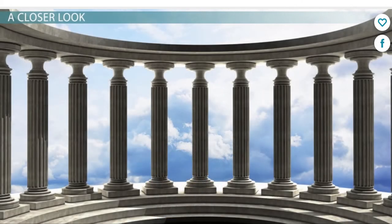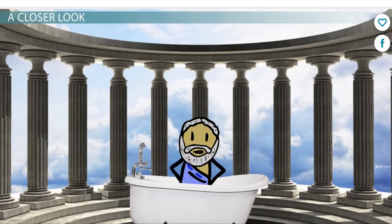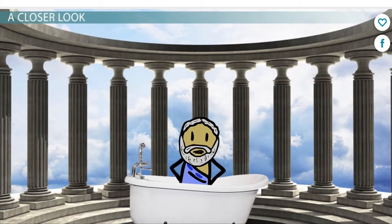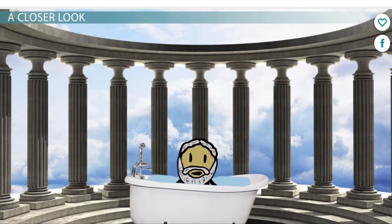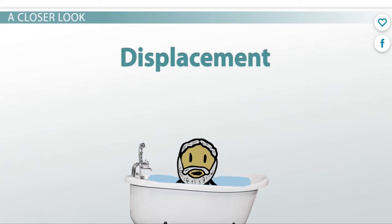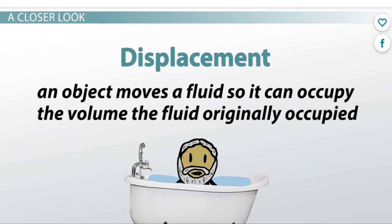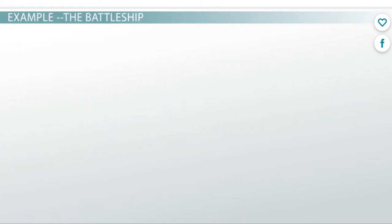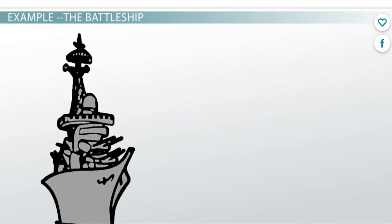As the story goes, Archimedes poured himself a warm bath one day, and when he got in he realized the level of the water went up. He then determined that the more of his body he put in the bath, the higher the water level went. This means the volume of his body that he put in the water had to move, or displace, the water so he could fit in the bath. Therefore, displacement in this context is when an object moves a fluid so we can occupy the volume the fluid originally occupied.